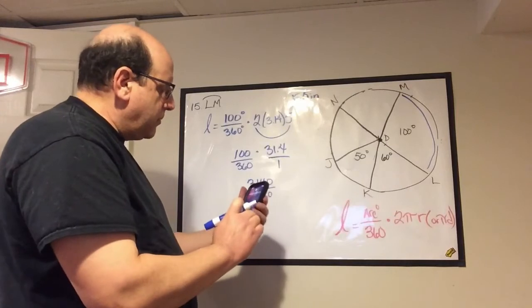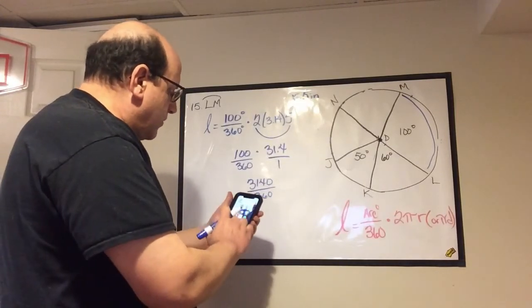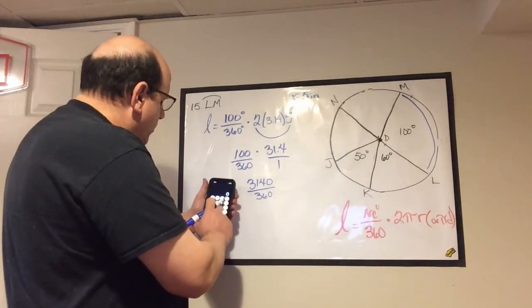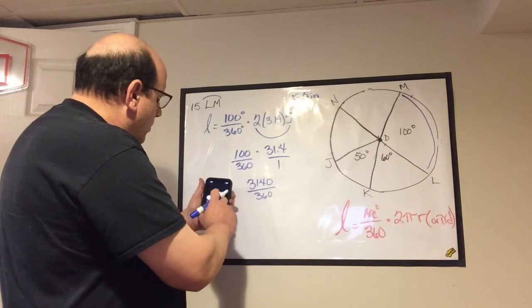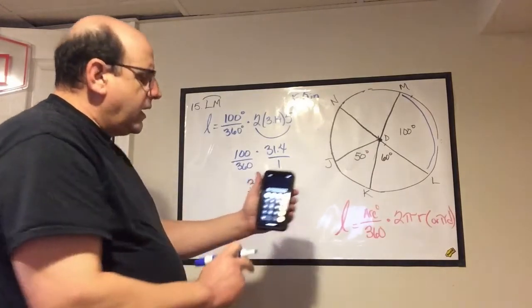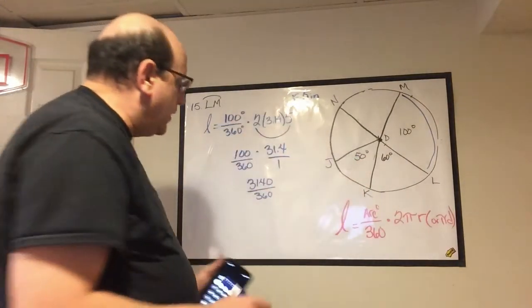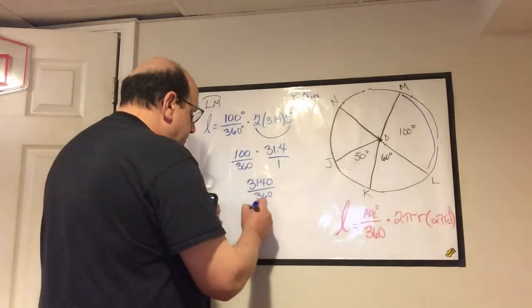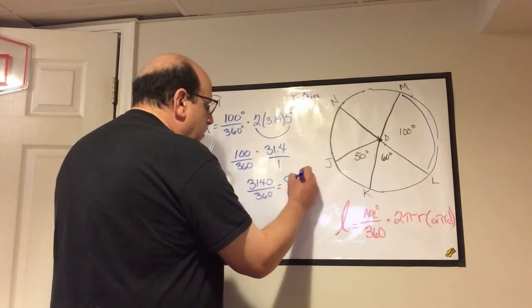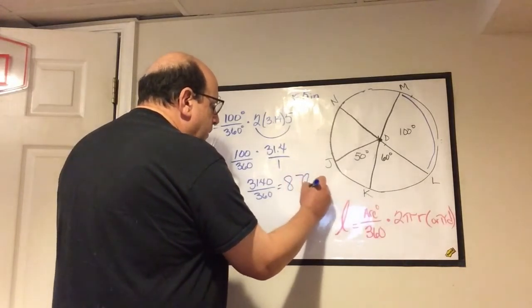If you've been able to use mental math for everything else, this is where we're actually going to have to use the calculator. So 3,140 divided by 360, and I get 8.72, and that two is repeating.